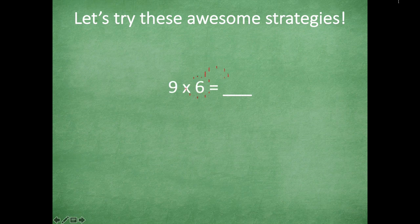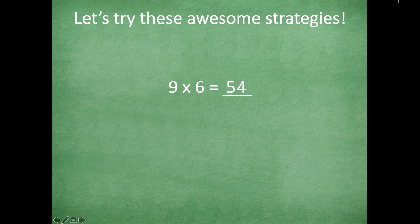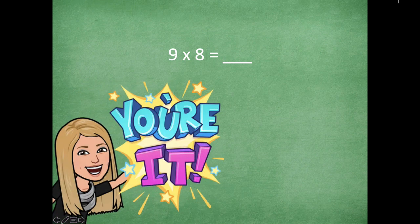Let's try these strategies. Nine times six: one less than six is five, and five plus what equals nine? Four! So I put four in the ones place — nine times six equals fifty-four. Now let's try nine times eight. Go ahead and do one less, find what you add to make nine, and you have your answer. Pause the video, try it, and click play when you're ready to go over it together.